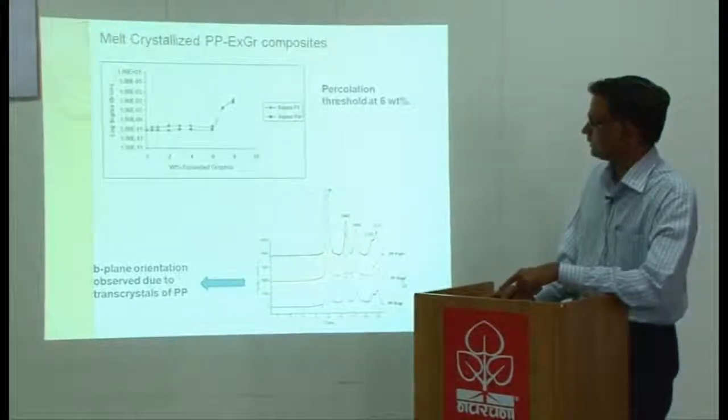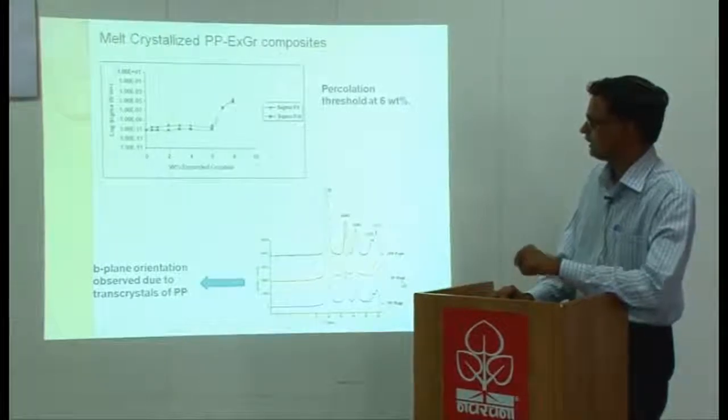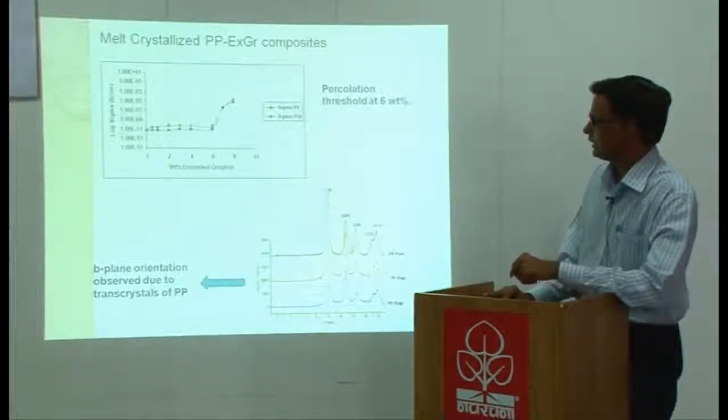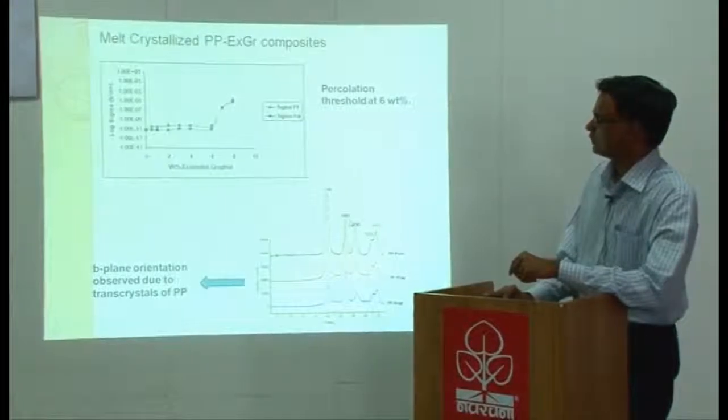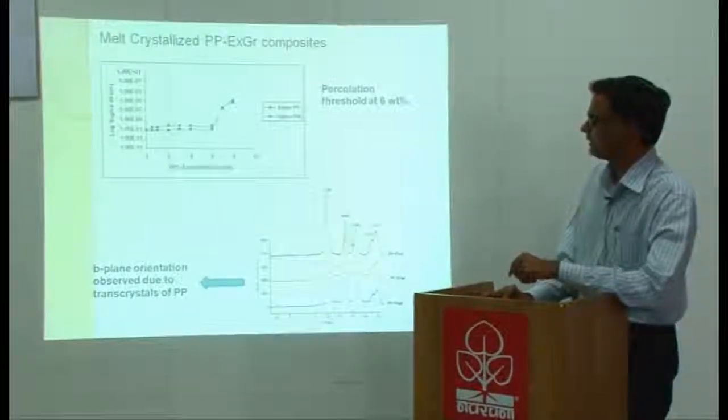But when you mix PP with 1% expanded graphite and melt crystallize at 190 degrees, what happens is that the intensity of 040 reflection shoots up, it increases.